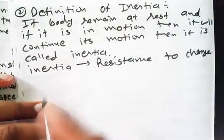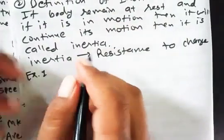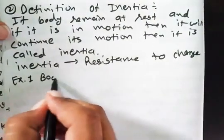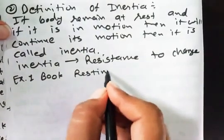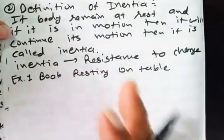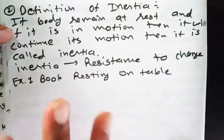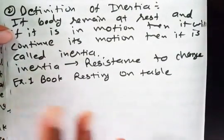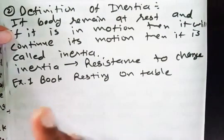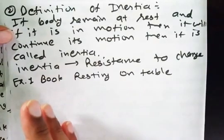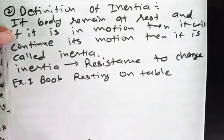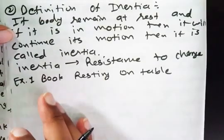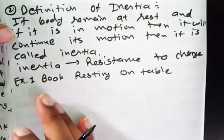Now, examples of inertia. The first example is a book resting on a table. The book will remain stable on the table because the table exerts a normal force on the book opposite to its weight, so the net force is zero. There is force acting but no displacement, so the book is in a state of inertia.